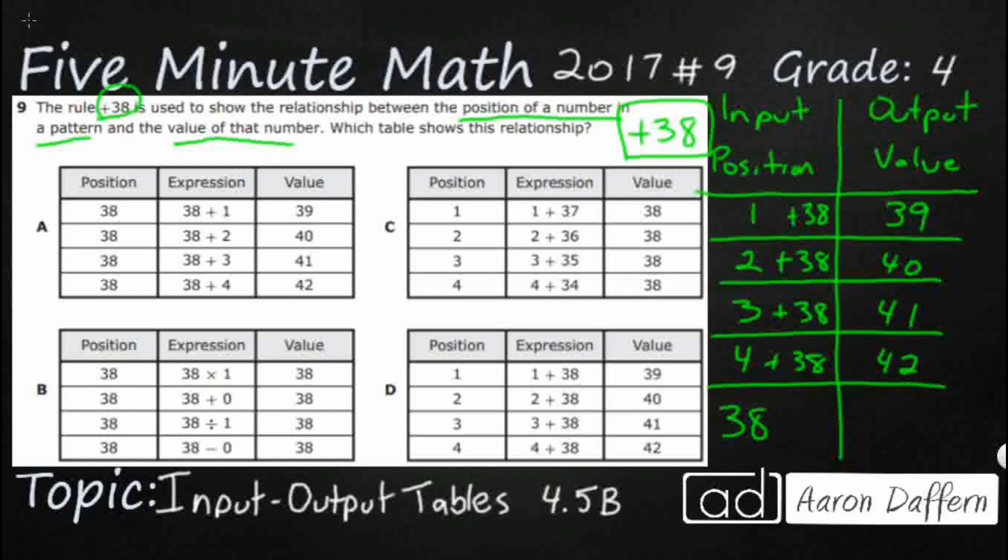I guess we've got to check out, let's say we skip some, we get down to 38 plus 38. That is going to be, let's see, double 38. 8 and 8 is 16. 30 and 30 is 60. 60 and 16, 76.